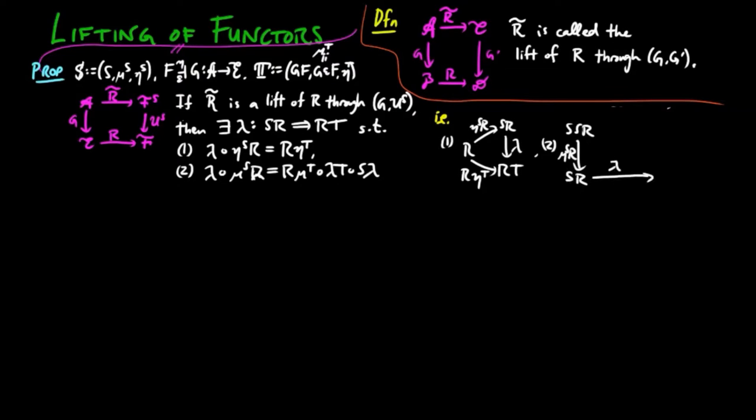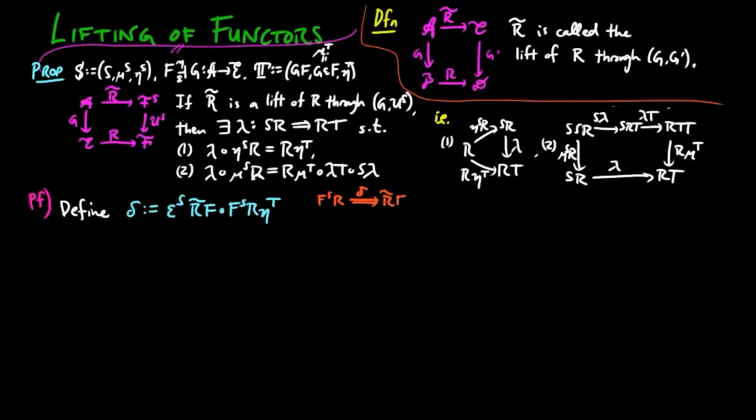In other words, the following diagrams commute. For the proof, we define delta to be the composition epsilon s r tilde f fs r eta t, and we define lambda to be u s delta.